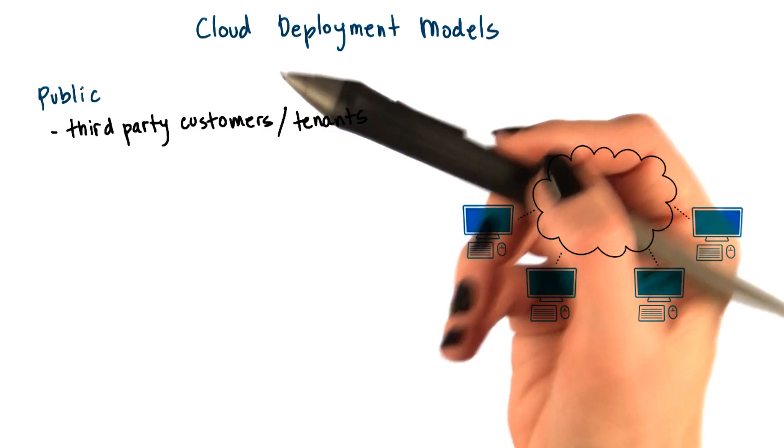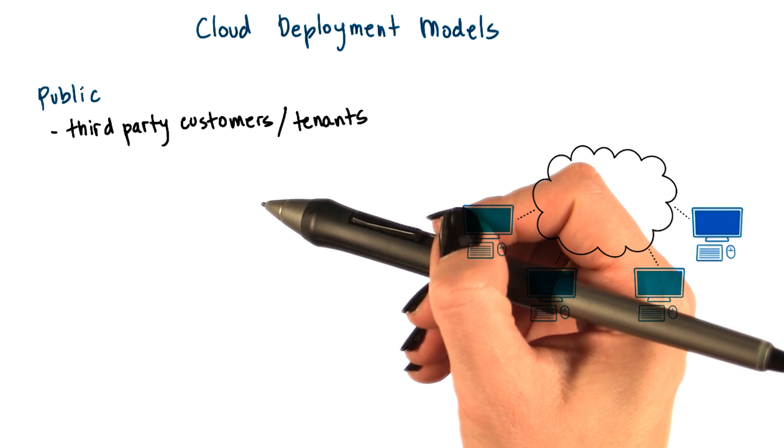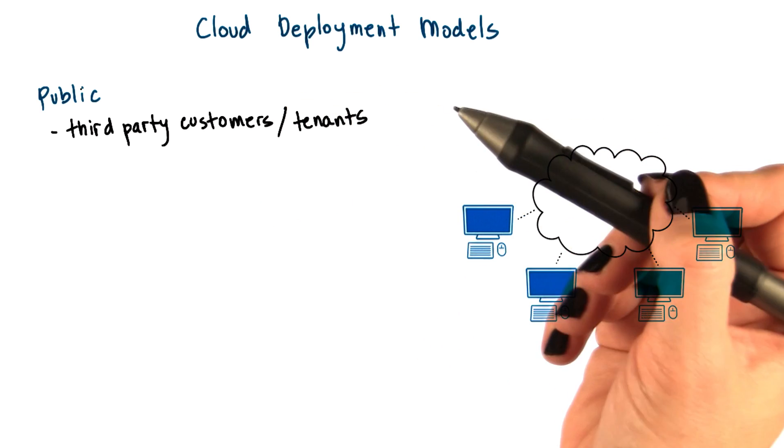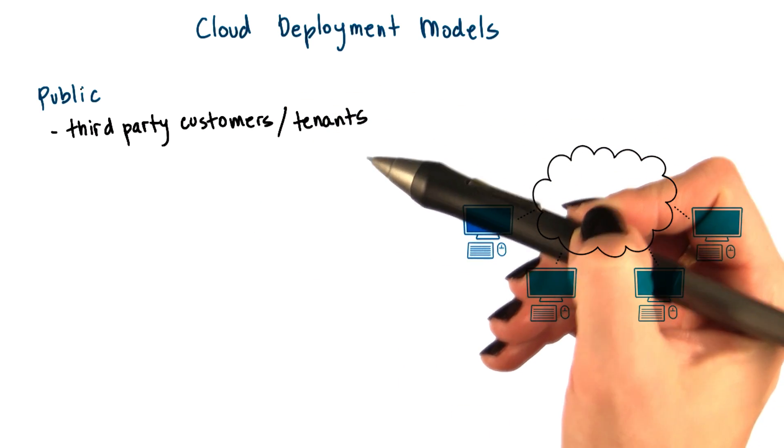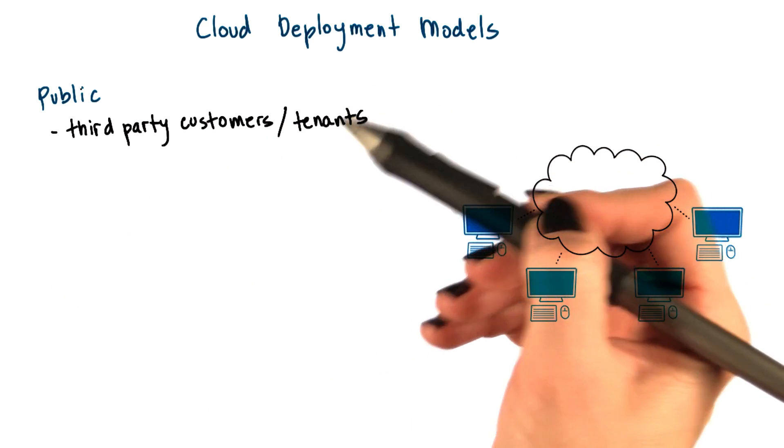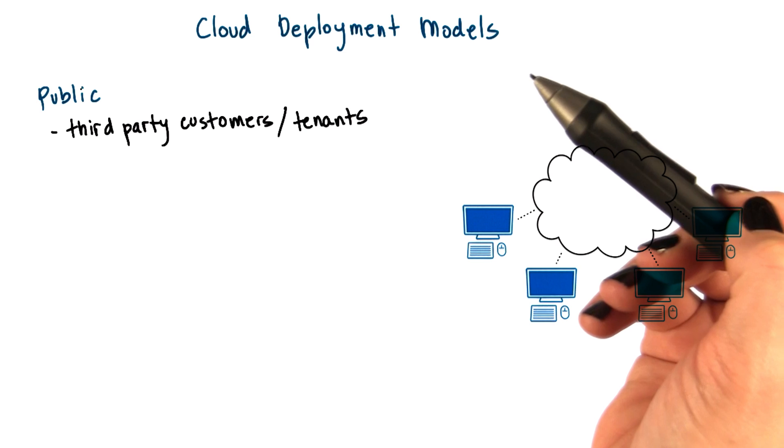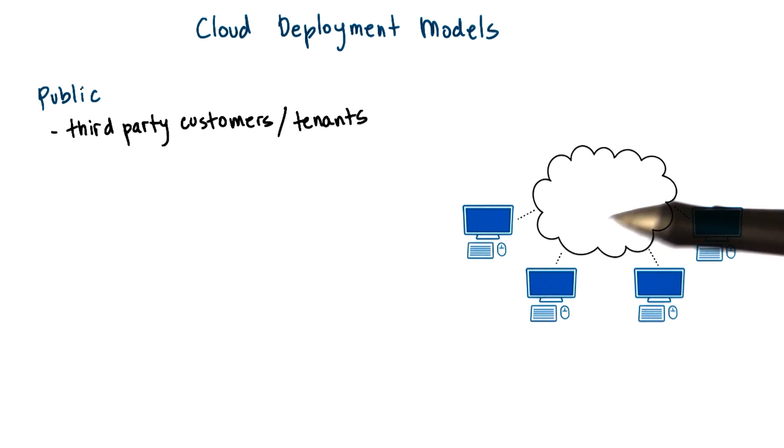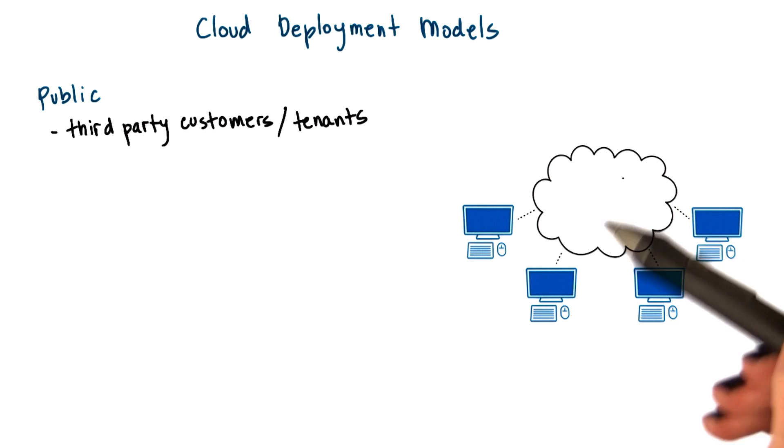Clouds can be public, like Amazon's EC2 cloud is a public cloud. This is a cloud where the infrastructure belongs to the cloud provider. However, third party customers or tenants, anyone with a credit card really, can come in and run their services, their infrastructure on top of Amazon's owned hardware.